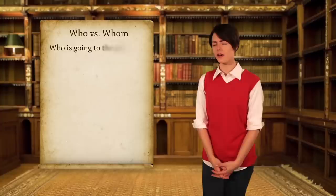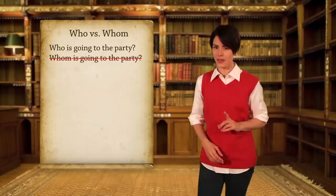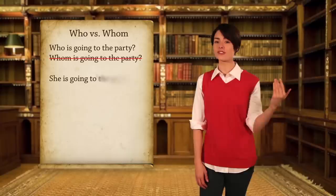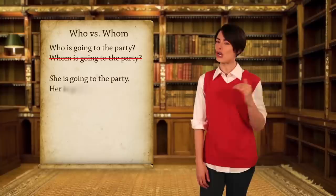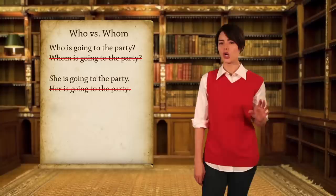Let's make sure you really get who versus whom. Which of these is correct: 'Who is going to the party?' or 'Whom is going to the party?' It's 'Who is going to the party.' Who is a subject pronoun, and who is the subject of the sentence. Here's a hint: try substituting she or her. 'She is going to the party' works, because she is a subject pronoun. 'Her is going to the party' sounds wrong, because her is an object pronoun — just like whom. So you know you wouldn't use whom here.